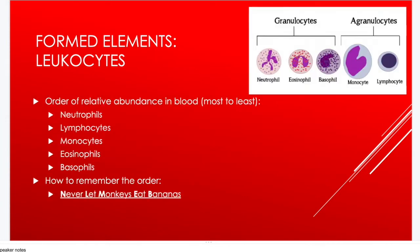To remember white blood cells from most to least abundant: neutrophils, lymphocytes, monocytes, eosinophils, and basophils. Use the mnemonic 'Never Let Monkeys Eat Bananas' — N for neutrophils, L for lymphocytes, M for monocytes, E for eosinophils, and B for basophils.